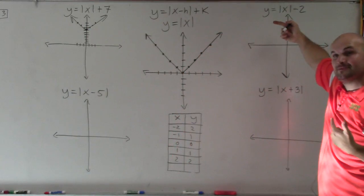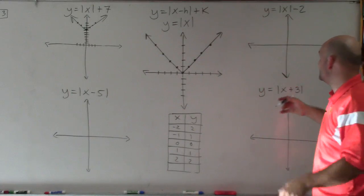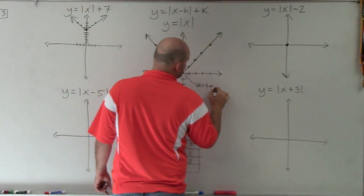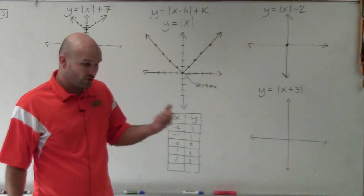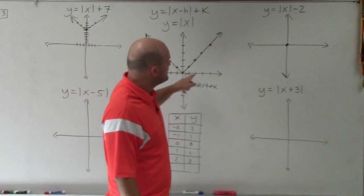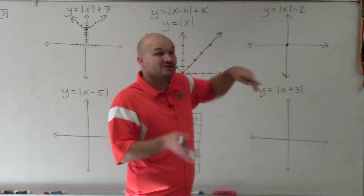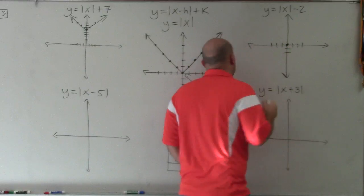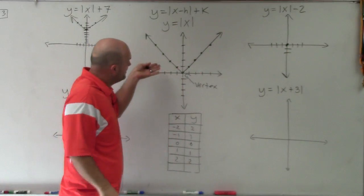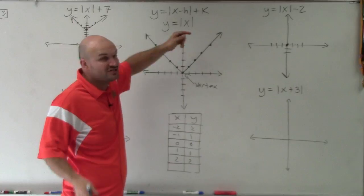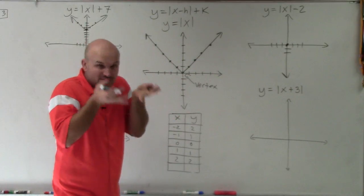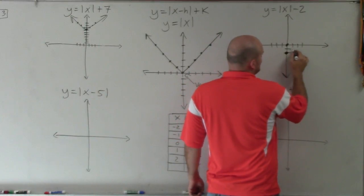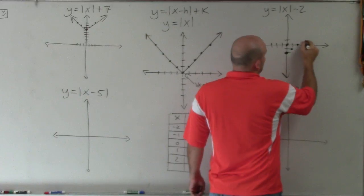When we're subtracting outside the absolute value, that's going to take the graph and shift it down two units. The vertex — which is where the slope changes from negative to positive, or its minimum value — instead of being at 0, the minus 2 tells you to shift it down two. So I go down two units, and then follow the same pattern of the graph: still over 1, up 1, over 1, up 1.